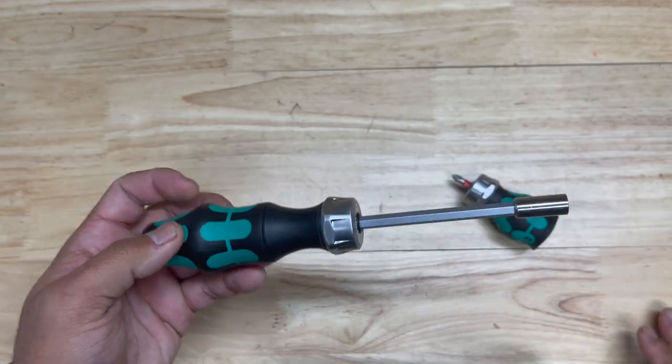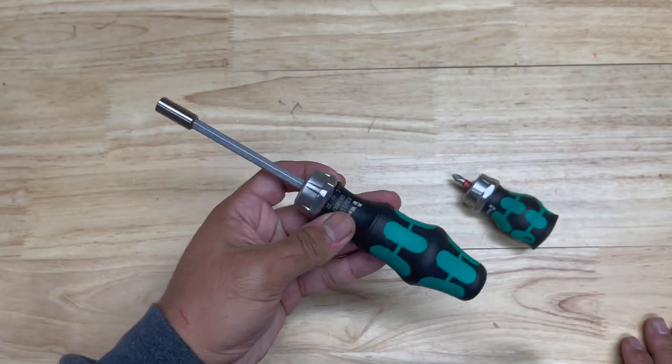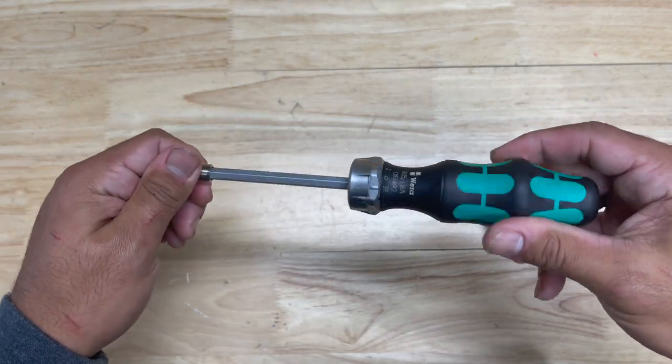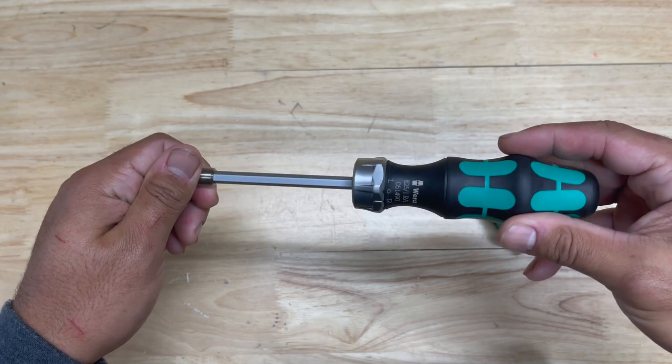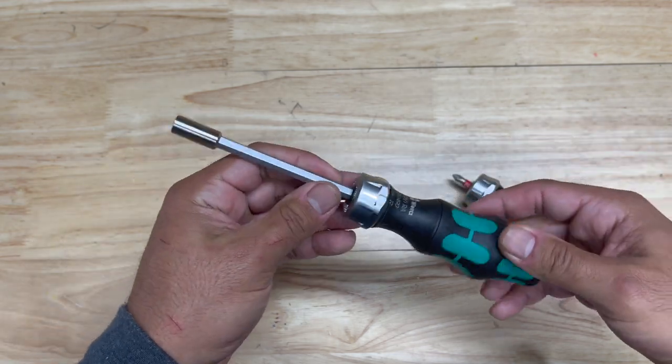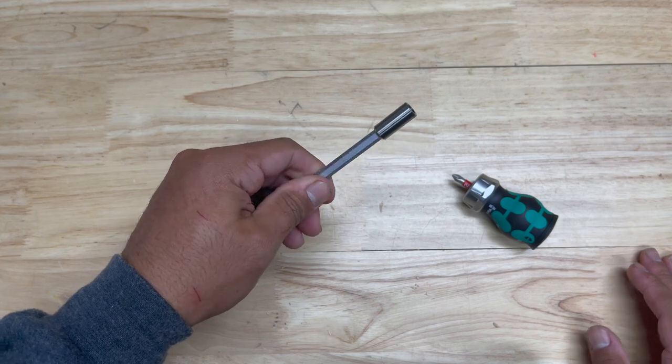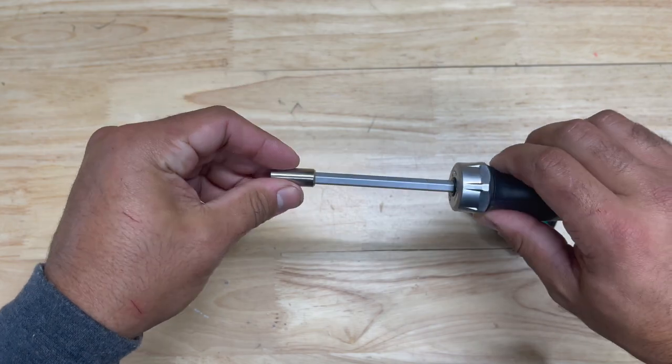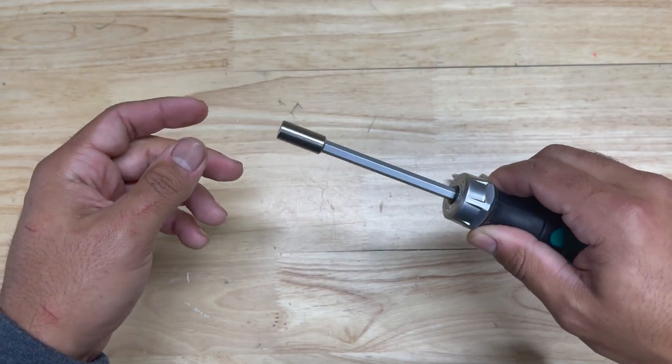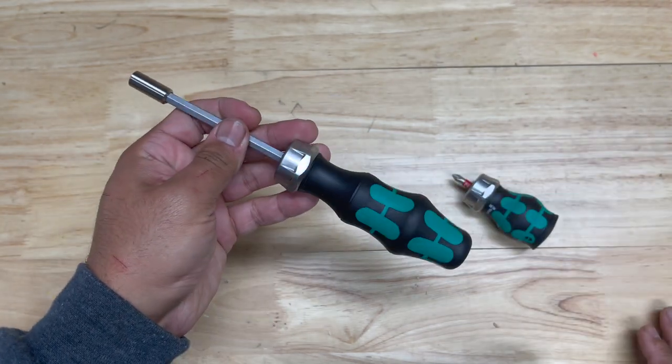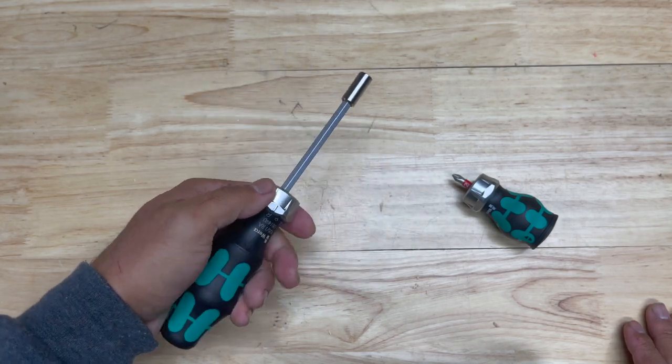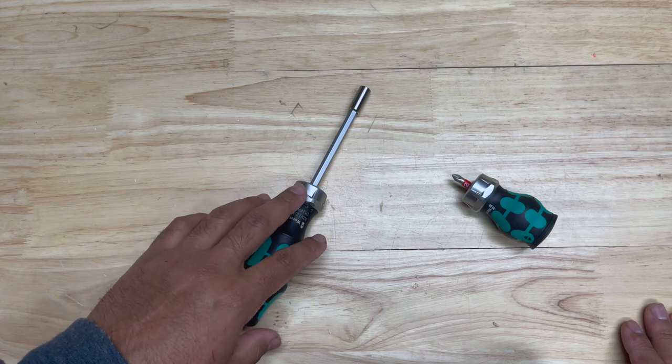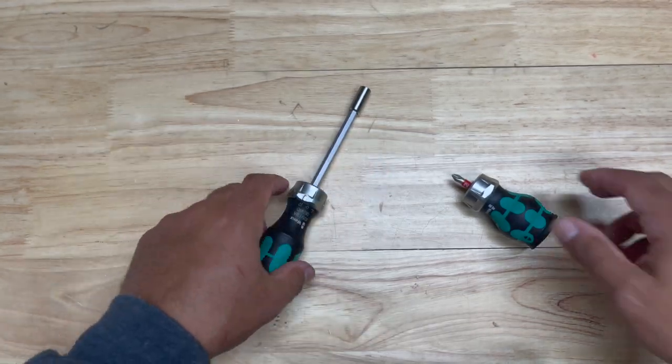Also of course I do have the KK27 ratcheting screwdriver and you can tell this has obviously the same ratcheting mechanism, same selector switch. It does have this extension and it isn't removable and there's a good little bit of play in there in the extension, the bit holder. I'm not a huge fan of that considering the price of this ratcheting screwdriver. I definitely think they could have tightened that up a bit and again I did a review on this and I'll leave a link to that video as well if you want to see it.